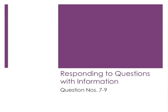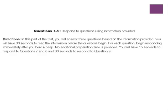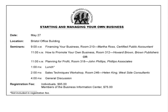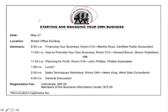Now let's look at responding to questions with information provided — questions 7 through 9. In this part of the test, you will answer three questions based on the information provided. You will have 30 seconds to read the information before the questions begin. For each question, begin responding immediately after you hear a beep. No additional preparation time is provided. You will have 15 seconds to respond to questions 7 and 8, and 30 seconds to respond to question 9. You will see a graphic like this on the computer screen, and it will stay on screen the entire time.